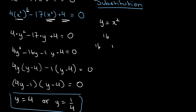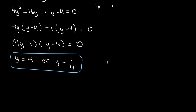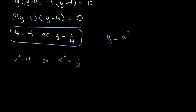The last step is to plug this back into our equation. We substituted y for x squared, so y is equal to x squared. Now we have two possible values: x squared can either equal 4 or x squared equals 1 over 4. We know 2 squared is 4, so x can equal positive or negative 2. And since (1/2) squared equals 1/4, x can equal positive or negative 1 over 2.